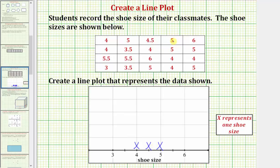The next shoe size is five, and because we already have an x here for the shoe size of five, we place the second x above the first x, so we begin to stack the x's as the shoe size repeats. The next shoe size is six, so we place an x here above the shoe size of six.